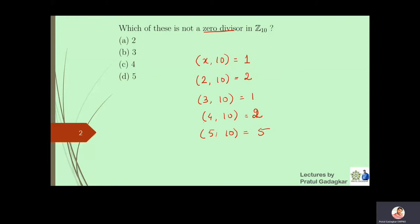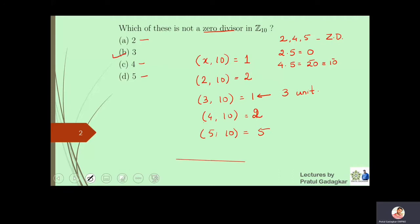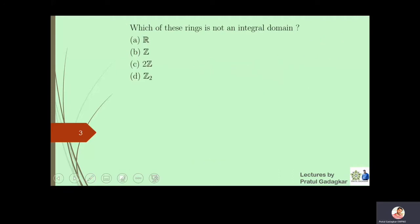Since 3 is relatively prime with 10, 3 becomes a unit. This means that 2, 4, and 5 will all become zero divisors of Z10, because 2 times 5 is 0, and 4 times 5 is 20, and 20 modulo 10 is also 0. So 2, 5, and 4 are all zero divisors, and the element that is NOT a zero divisor is 3.